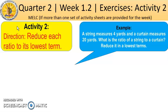Let us read the problem. A string measures 4 yards and a curtain measures 20 yards. What is the ratio of a string to a curtain? Okay, reduce it in lowest term.